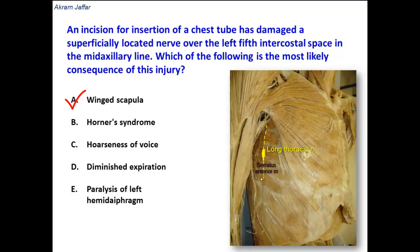Serratus anterior also helps in abduction of the shoulder joint beyond 90 degrees. Beyond 90 degrees, shoulder abduction requires the action of both serratus anterior and the trapezius muscles. So if serratus anterior is paralyzed, this will result in weakness or difficulty in abducting the shoulder. However, there is still a possibility of abduction because the trapezius muscle is supplied by the accessory nerve.